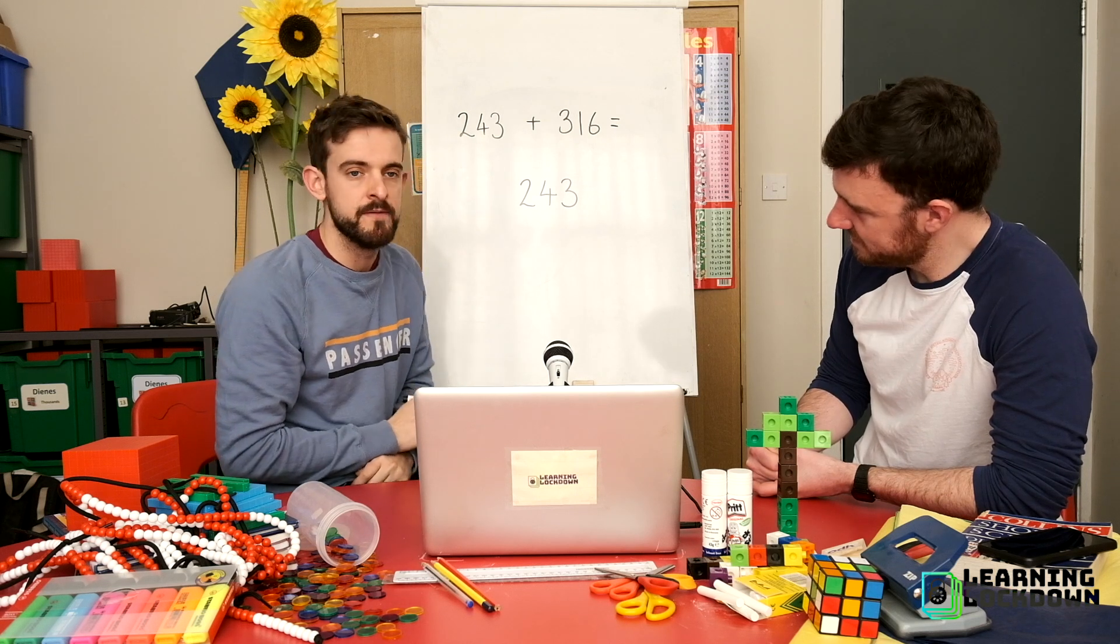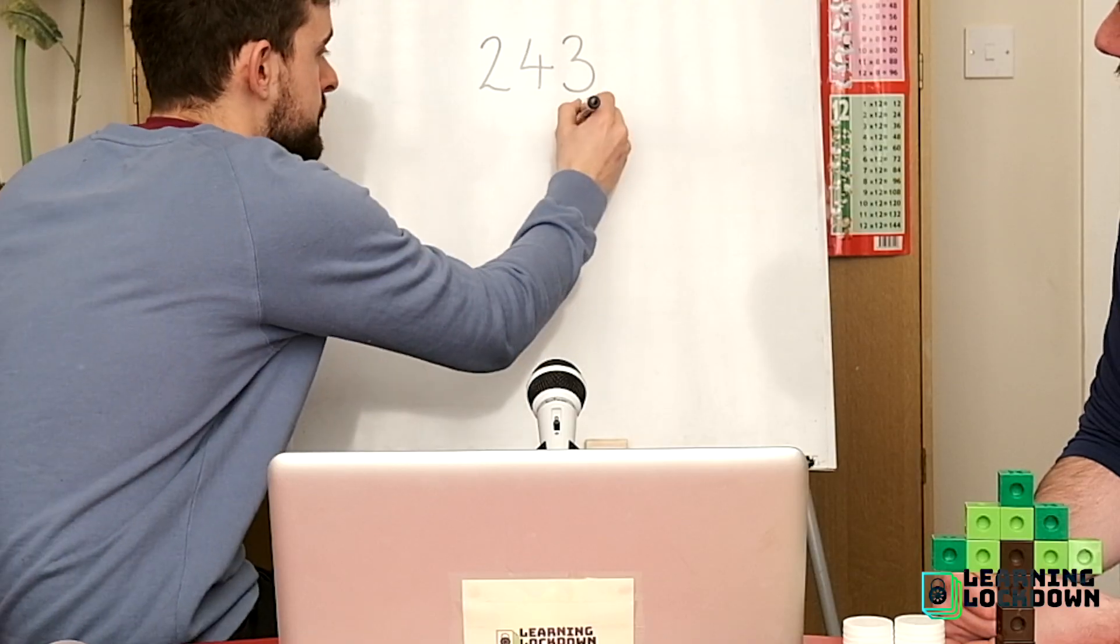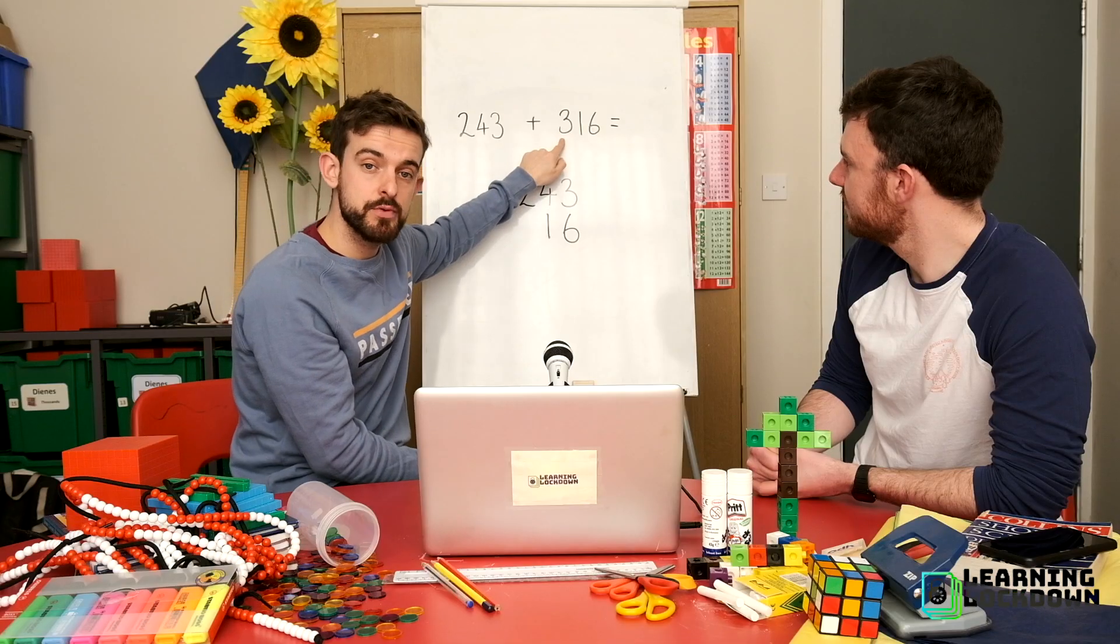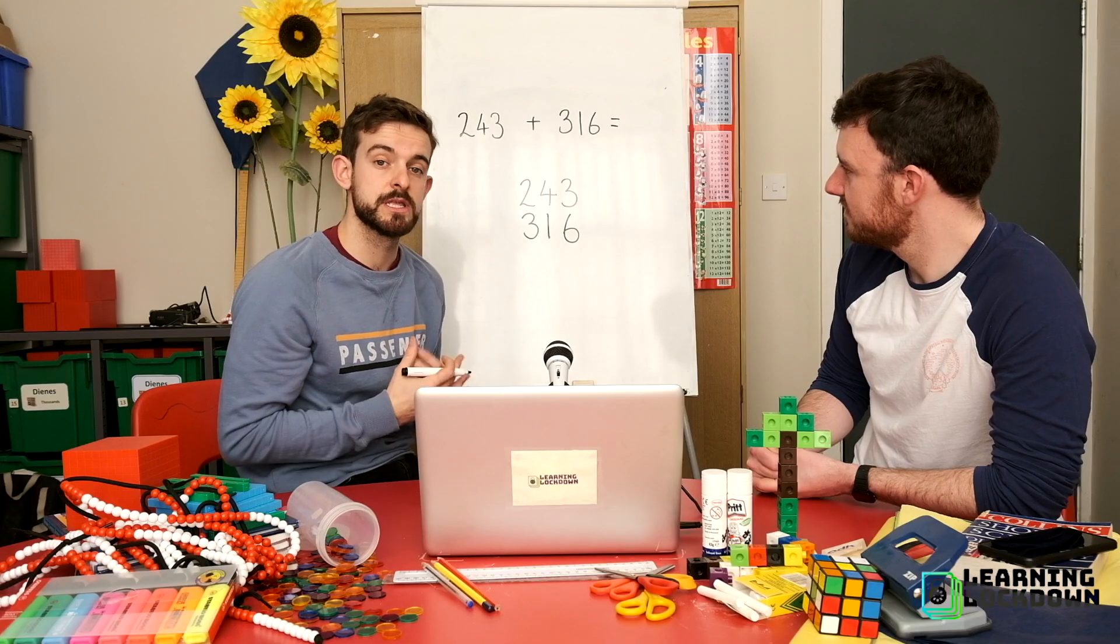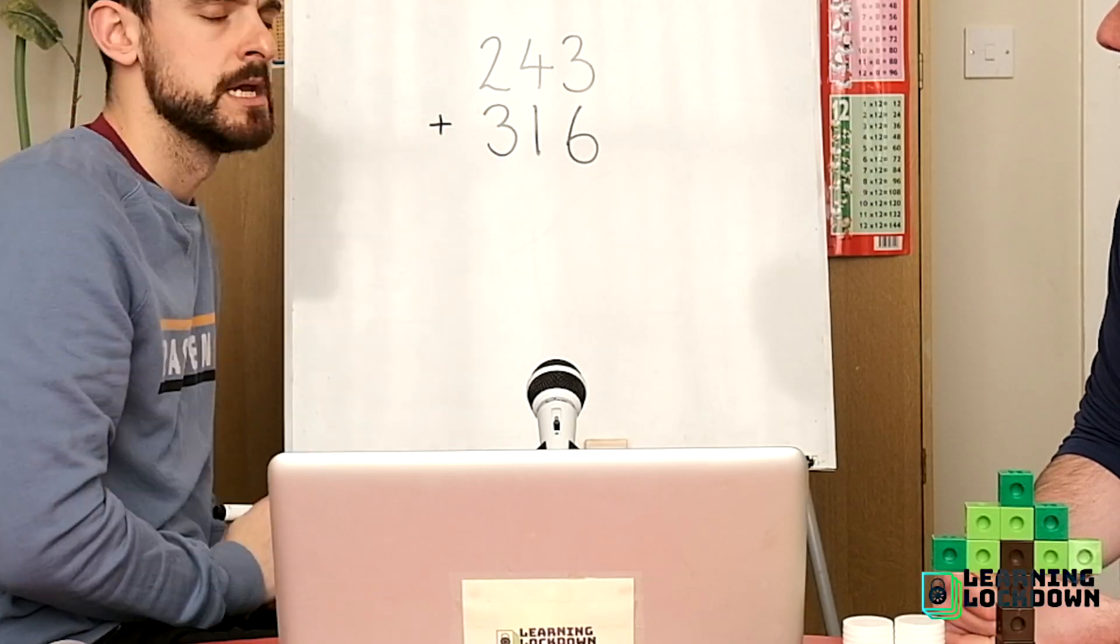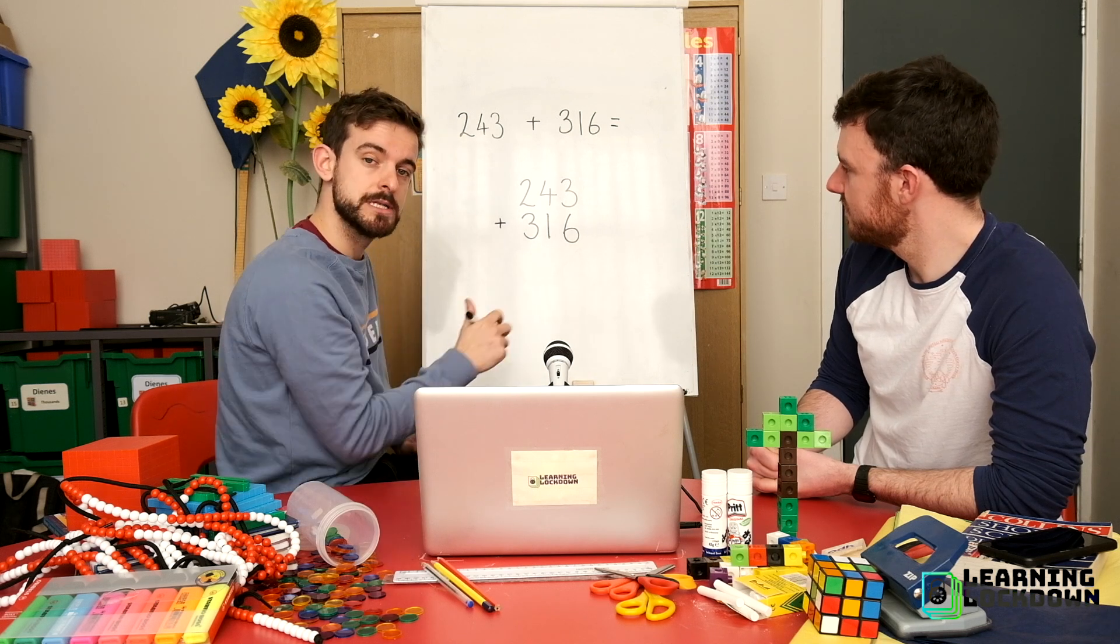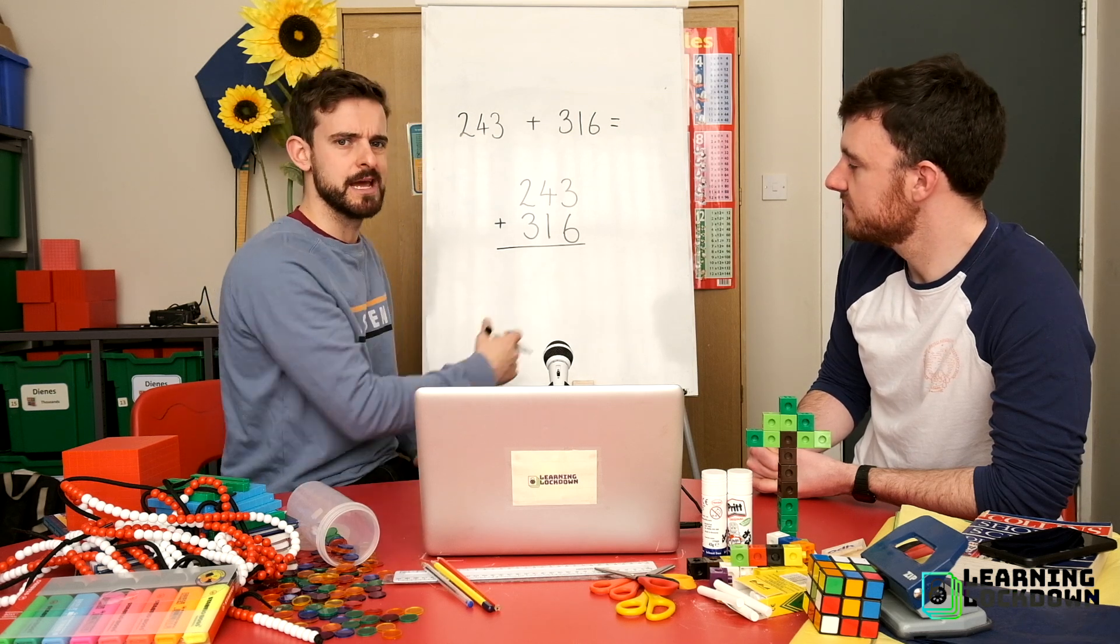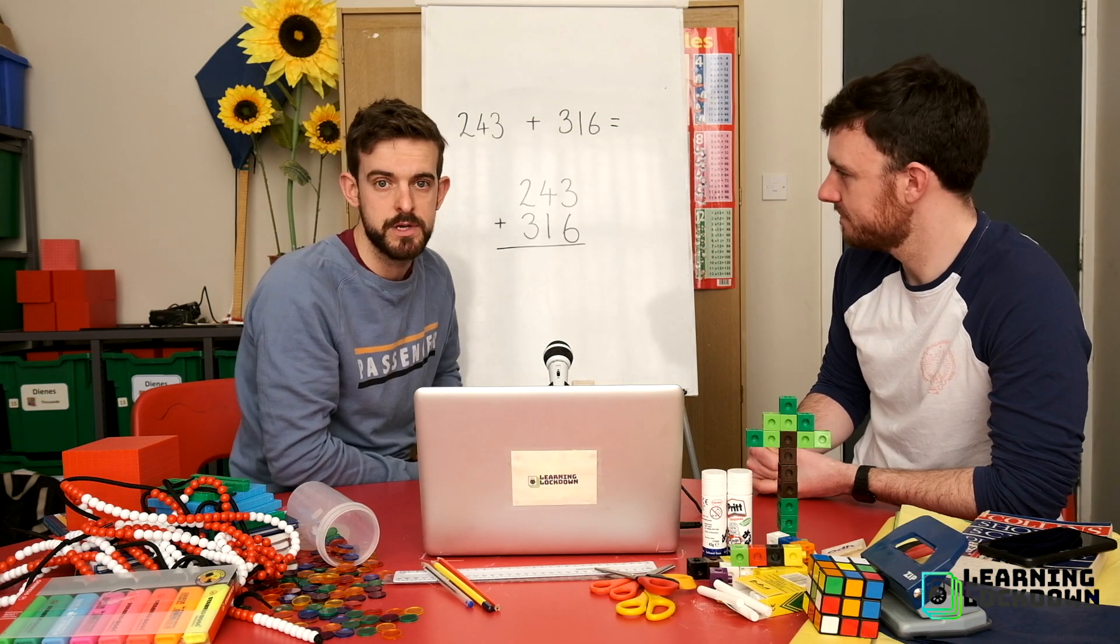So our six ones has to go under our three ones, our one ten under our four tens, and our three hundreds under our two hundreds. And what is the calculation we are doing? Well we're doing an addition one, so we put the symbol just here. Then using a ruler at home, we don't have one here, but using a ruler at home, put a line underneath that. And we simply work, strangely not from left to right like we do normally when we're reading, we work from right to left, and we'll see why in the next sum why we do that.